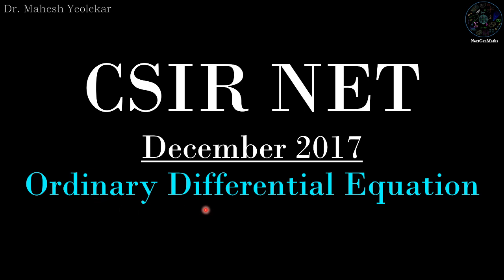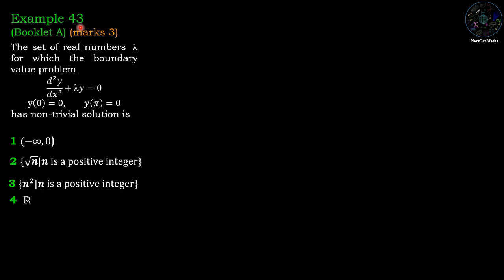Hello friends, in this video we are going to discuss a problem of ordinary differential equations from CSIR-NET December 2017. Example number 43 from booklet A, marks 3. The set of real numbers lambda for which the boundary value problem d²y/dx² + λy = 0, with boundary conditions y(0) = 0 and y(π) = 0, has a non-trivial solution. The options are: (1) (−∞, 0), (2) {√n : n is a positive integer}, (3) {n² : n is a positive integer}, (4) the set of all real numbers.